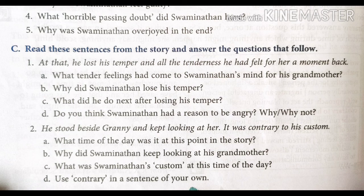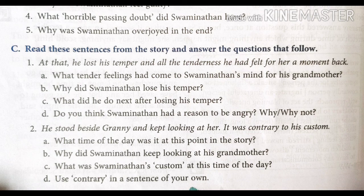Let's tackle the second question. Let's read the context first: 'He stood beside granny and kept looking at her. It was contrary to his custom.' Contrary means opposite; custom means what he used to do daily, his daily routine. Question A: What time of the day was it at this point in the story? It was late evening when he was coming back after playing his match.